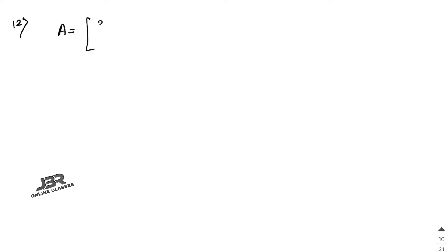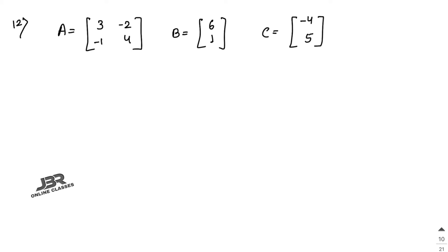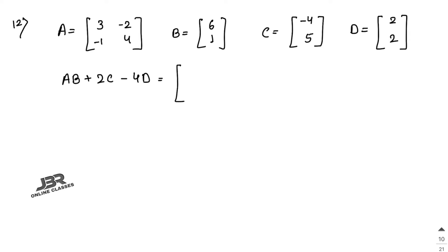Sum number 12: matrix A = [3, -2; -1, 4], matrix B = [6; 1] (a 2×1 matrix), matrix C = [−4; 5], and matrix D = [2; 2]. Find AB + 2C − 4D.